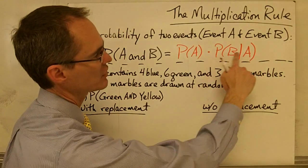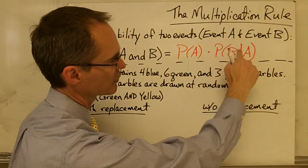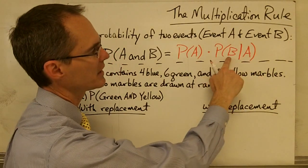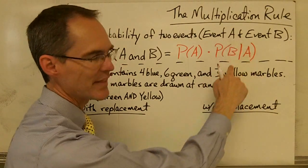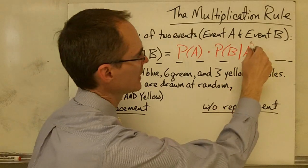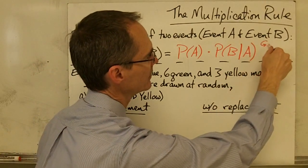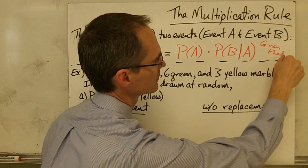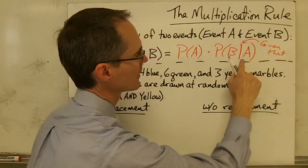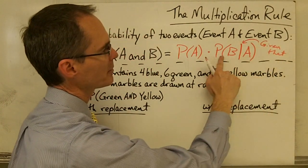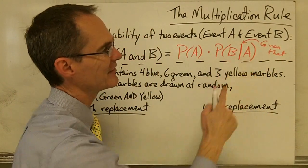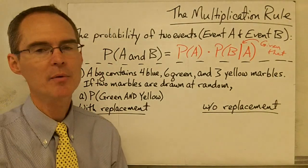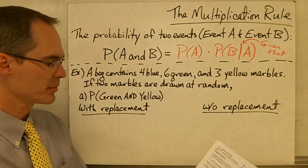This notation — B followed by a vertical line and then A — means the probability of event B given that event A has already happened. That little vertical line means 'given that.' So P(B | A) is the probability of event B, given that event A has already occurred. Let's take a look at how we might use this formula in the next example.